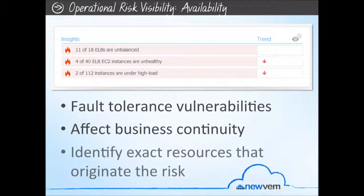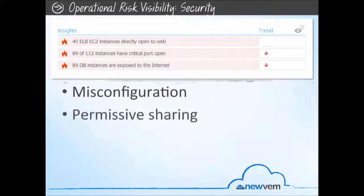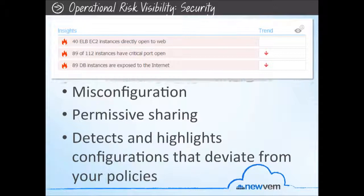Visibility into these risks allows you to identify the exact resources that originate the risk. This allows you to timely assess the potential impact of a failure and decide on a course of action that improves your deployment's fault tolerance. NewVim provides broad visibility into your cloud security configuration. Misconfiguration of security groups and permissive sharing privileges may expose your cloud installation to vulnerabilities and place your assets and data under risk. By continuously scanning your security configuration, NewVim detects and highlights configurations that deviate from your policies and can present risks to your cloud deployments. Visibility into these risks allows you to see the actual configuration non-conformity and identify each one of your resources that are under risk, so you can timely assess the impact of the potential vulnerabilities and decide on a course of action.